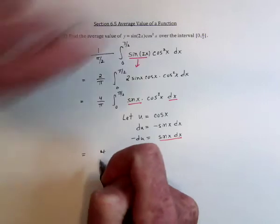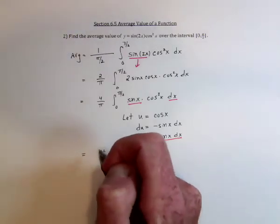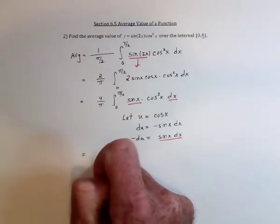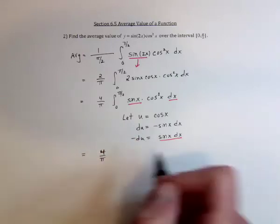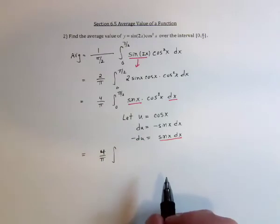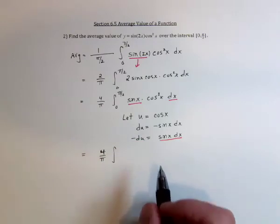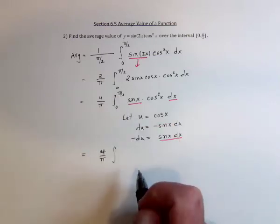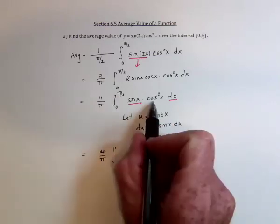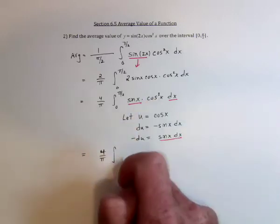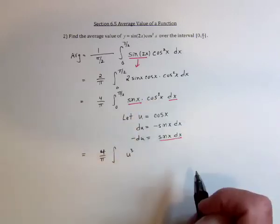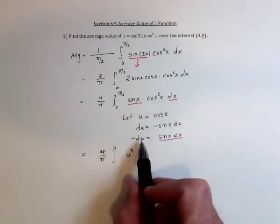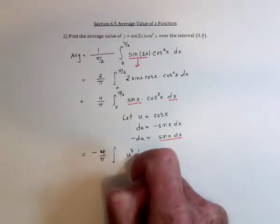So I would write it as 4 over pi, and then integrate and leave off the 0 and pi over 2, because I'm going to switch over to the u-system for a moment. And these are for x's. So you've got cosine to the third, so that's going to be u to the third. And then replacing the sine of x and the dx is just a negative. The negative can go out here, du.